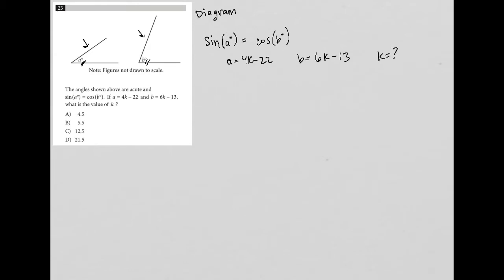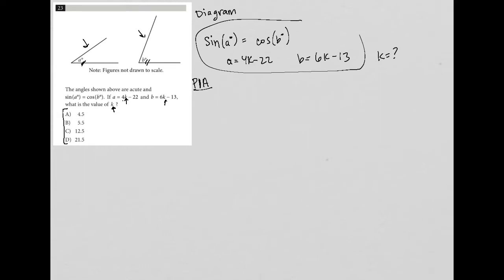This is a perfect plug-in answers question. Plug-in answer questions will basically always ask you for the value of a variable, and all the answer choices represent the value of that variable — you can plug these values into an expression or equation. So combining this together: sine of a means sine of (4k − 22), and cosine of b means cosine of (6k − 13).